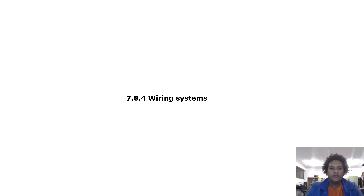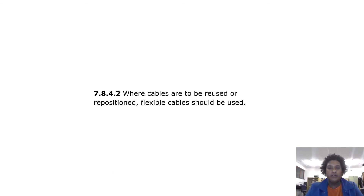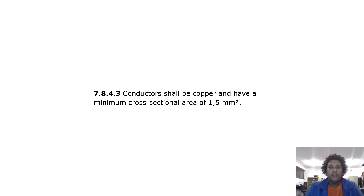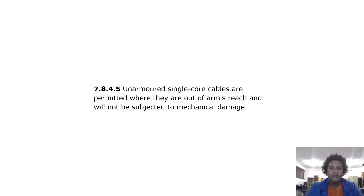Wiring systems: cables shall be selected or protected to withstand likely mechanical damage. Where cables are to be reused or repositioned, flexible cables should be used. Conductors shall be copper and have a minimum cross-sectional area of 1.5 mm². Uninsulated live conductors are not permitted. Unarmed single-core cables are permitted where they are out of arm's reach and will not be subjected to mechanical damage.